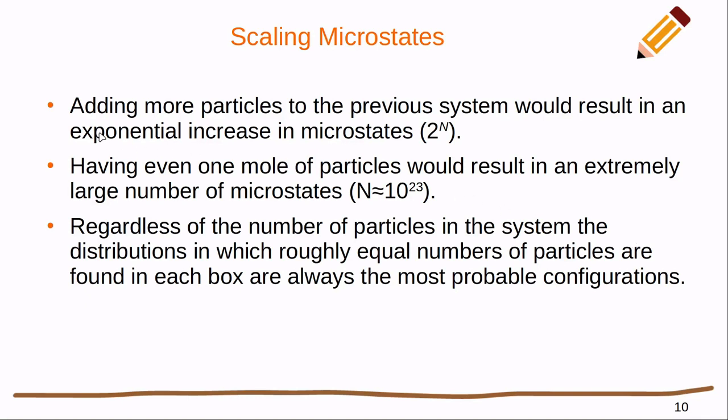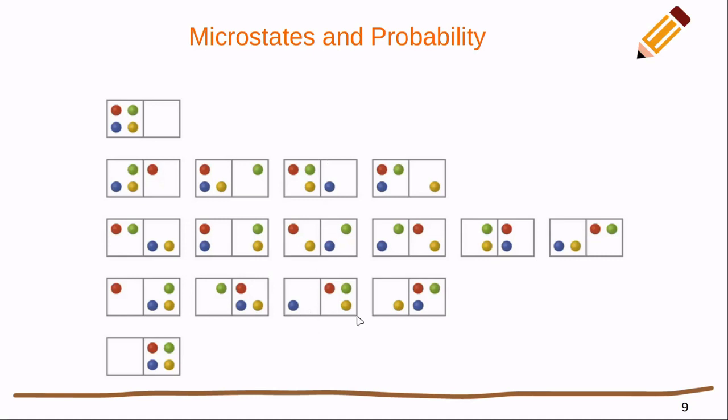Going through this, we can draw two big conclusions. Number one, we have a greater probability of being in a situation where everything is evenly distributed, and that is because that has the largest number of microstates. When we're dealing with something other than that really simple system, it does scale up quite fast. Adding more particles would result in an exponential increase in microstates, where we're going to have 2 to the n, where n is the total number of particles. 2 to the n is going to get real big real fast. If we had even one mole of particles, we would have n equals roughly 10 to the 23, so we'd have 2 to the 10 to the 23rd power. We can't continue to always model things this way.